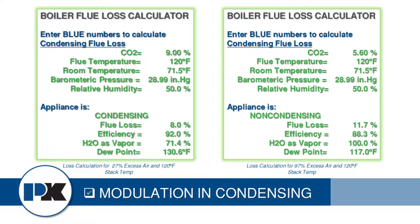Let's look at a couple of examples from the flue loss calculator. We ran an actual test — on the left side we did a five to one turndown with roughly 22 percent excess air, and on the right side we used 80 percent excess air for a 20 to 1 turndown. On the left, the flue temperature is 120 degrees. With a five to one turndown we're well below the dew point, so we are going to condense and we will exceed 90 percent efficiency. However, that same boiler at 20 to 1 turndown also shows a flue temperature of 120 degrees, but the dew point has dropped to 117 — so again, we're not going to condense inside the boiler.